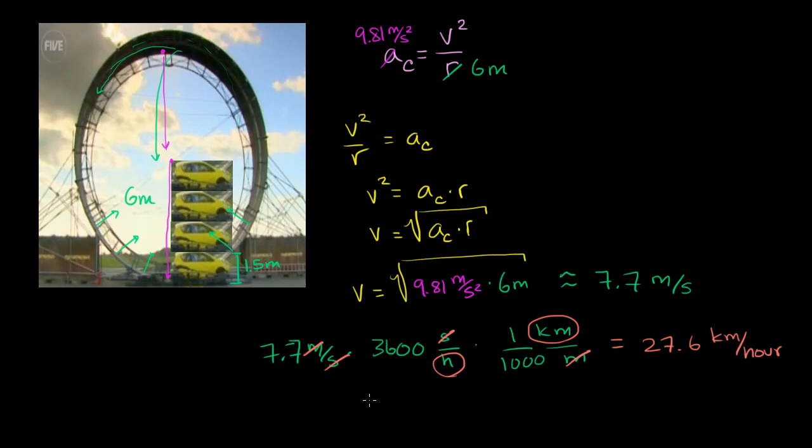So this is equal to 27.6 kilometers per hour, which is surprisingly slow. I would have thought that it would have to be much, much, much faster. But it turns out it does not have to be much, much faster. Now, the important thing to keep in mind is this is just fast enough at this point to maintain the circular motion. But if this were a perfect circle right over here, and you're going at exactly 27.6 kilometers per hour, you would not have much traction with the road. And if you don't have much traction with the road, the car might slip and might not be able to actually maintain its speed. So you definitely want to be a good bit, you want your speed to be a good bit larger than this in order to keep a nice margin of safety.